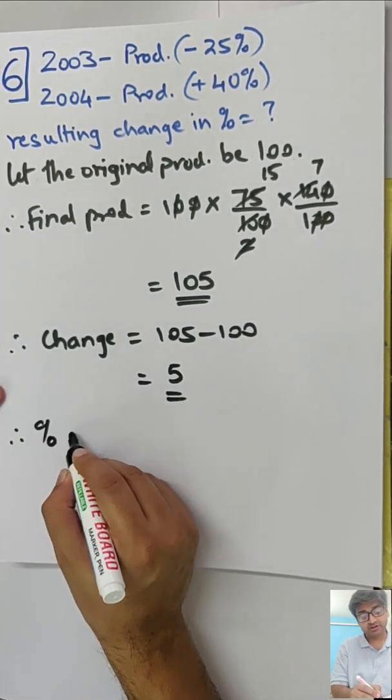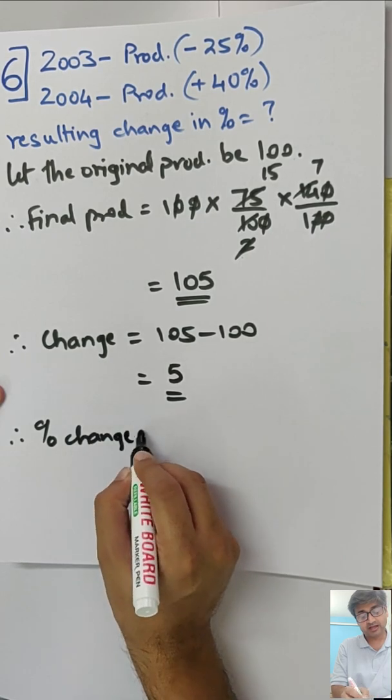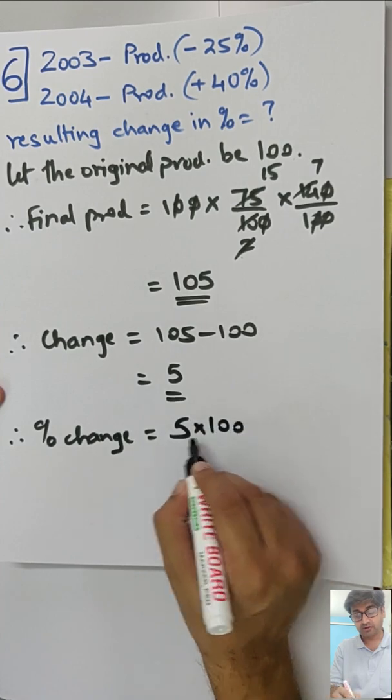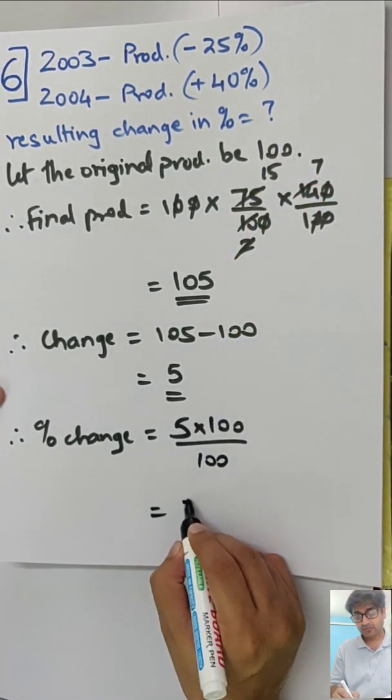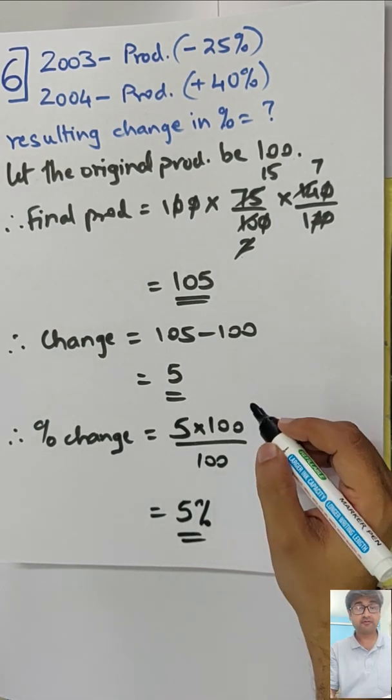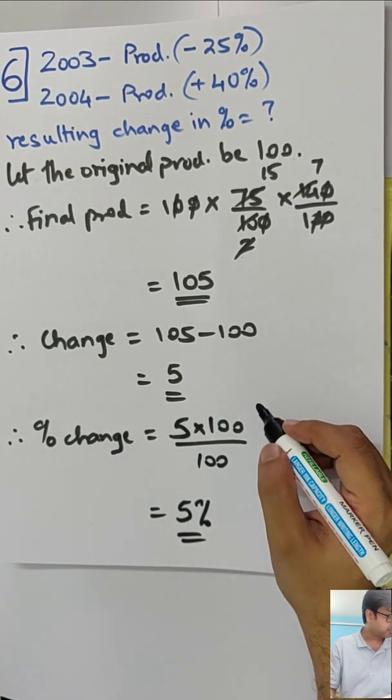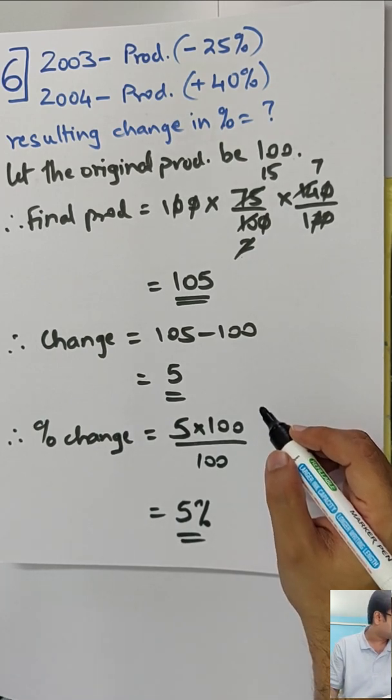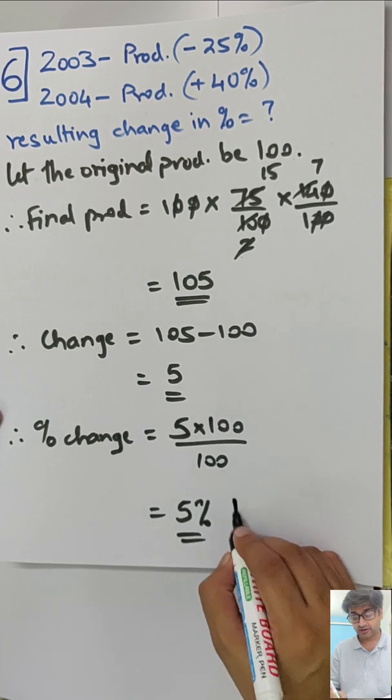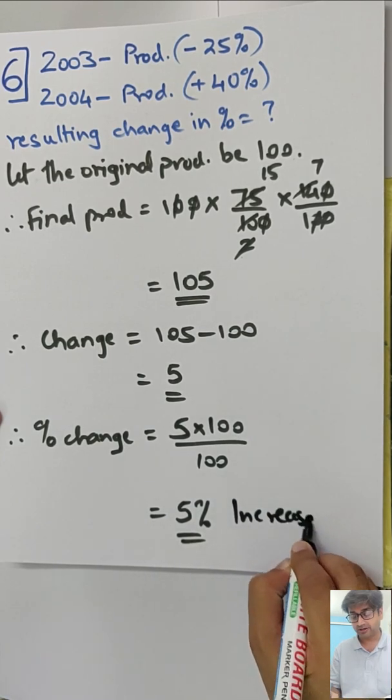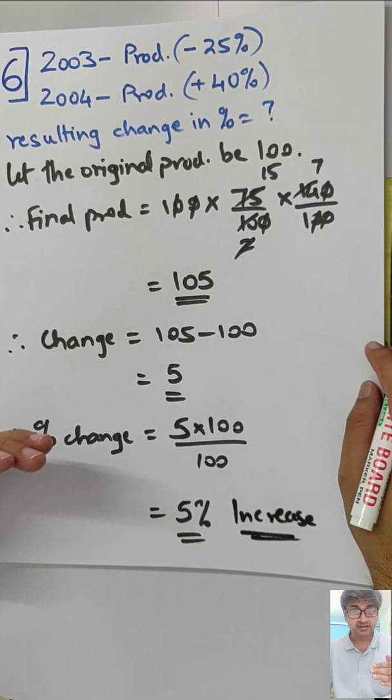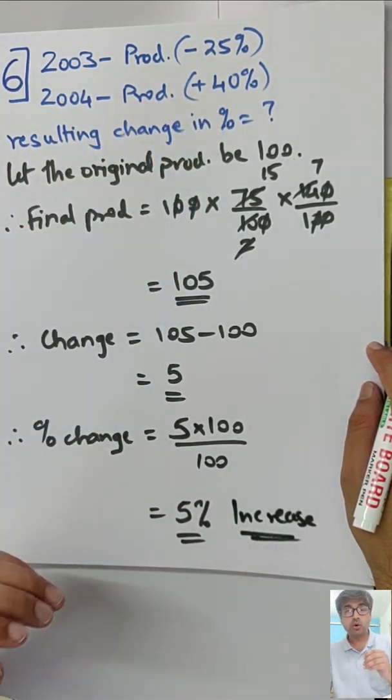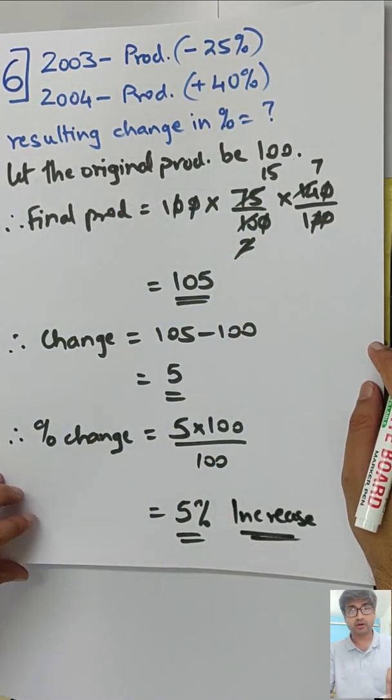Therefore change is 105 minus 100, that is 5. And therefore percent change, don't forget to do this last part, don't take this only as percent, otherwise you lose one mark. So 5 into 100 of the original which is 100. How much is the percent change? 5% increase. Overall only 5% increase compared to what the original one was.